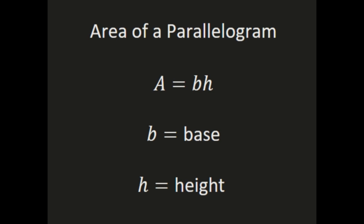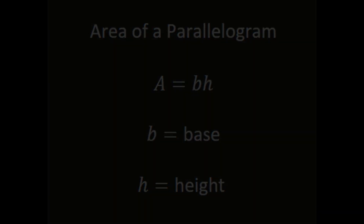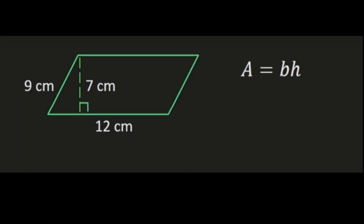Let's take a look at our examples. In this example we have a parallelogram that's 9 centimeters by 12 centimeters and we're going to find the area using the formula area equals base times height. The base of our parallelogram is 12 centimeters and the height is drawn from the opposite side perpendicular to the base.